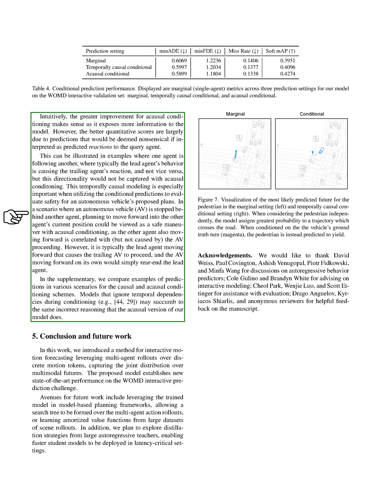In conclusion, our model's ability to generate joint rollouts directly and its use of interactive attention allows it to make more accurate predictions and reduce the likelihood of implausible overlaps between different agents' predictions. The number of rollouts and the type of conditioning used also have a significant impact on the model's performance.